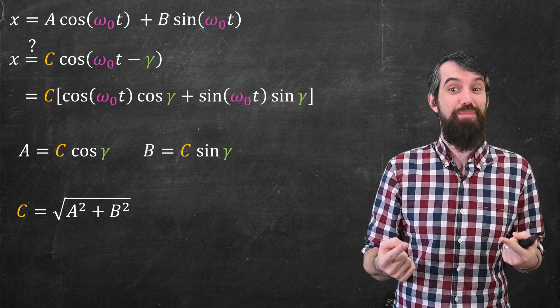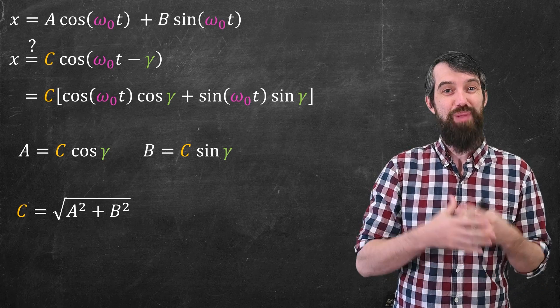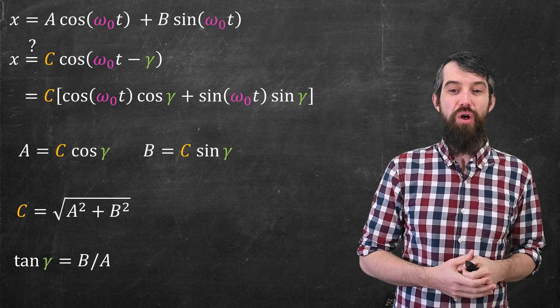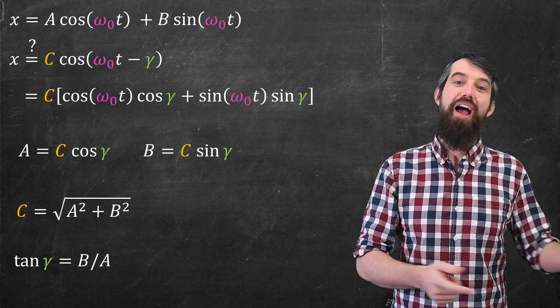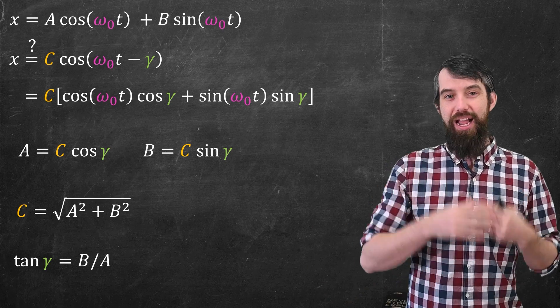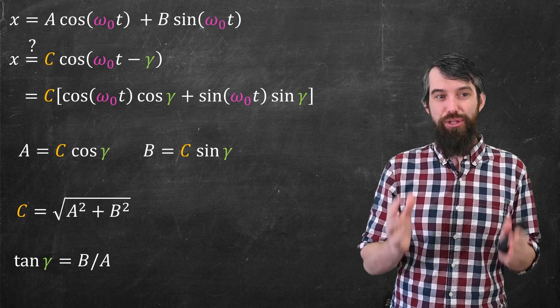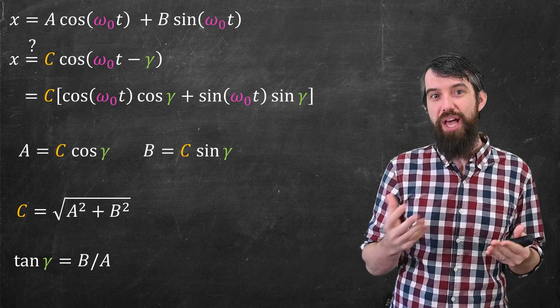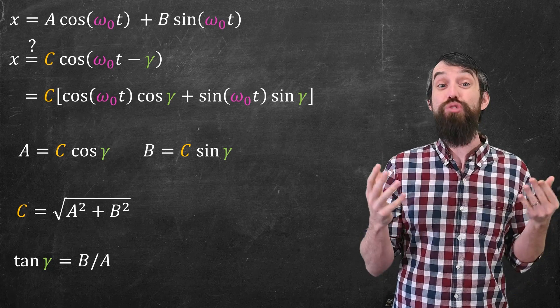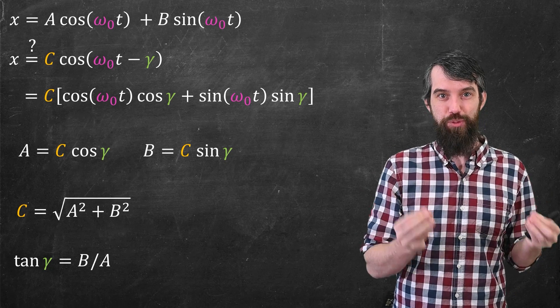So for example, I could solve for the C just by Pythagoras. It would be √(A² + B²). And I could solve for the γ, because the tangent of γ would be equal to B over A, and then you could take an arctan from there. And so the final point is that this solution of the form C cos(ω₀t - γ) is really the solution to the frictionless mass on the spring.